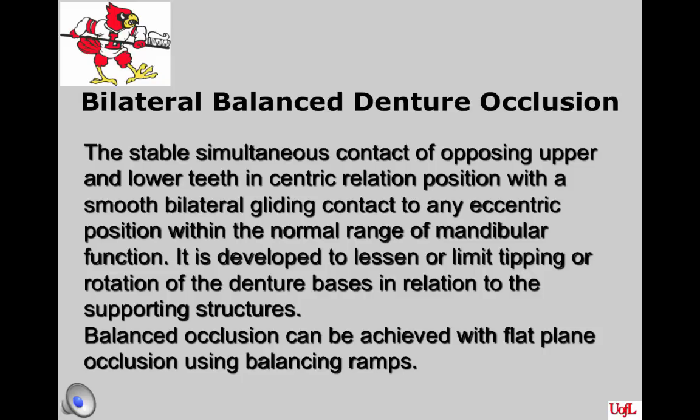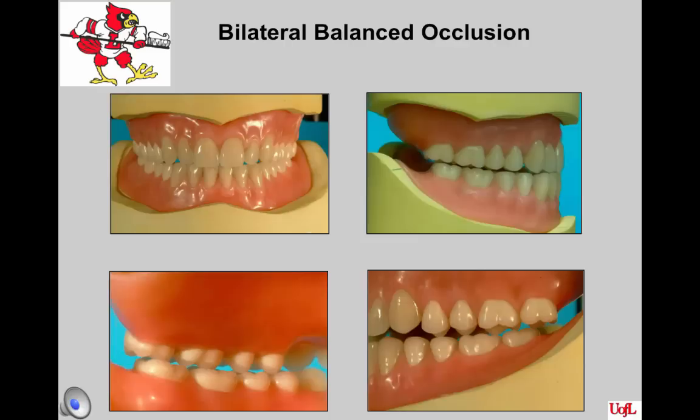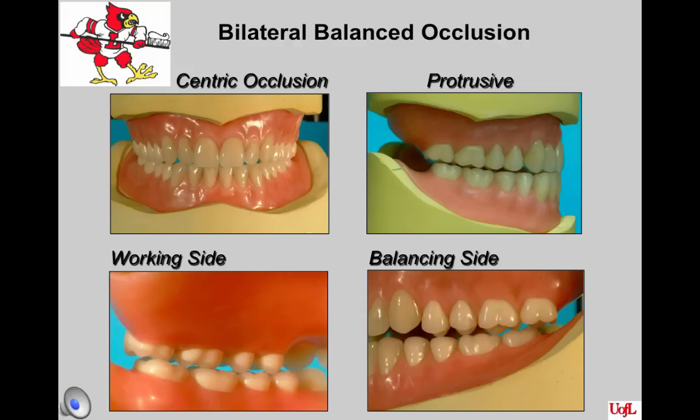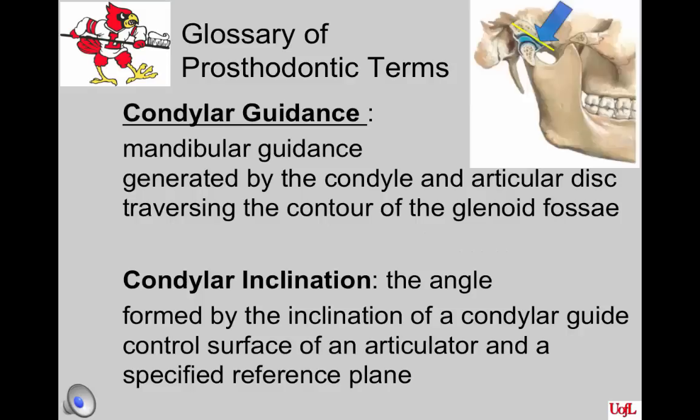Bilateral balanced denture occlusion is usually worked into the occlusal scheme when anatomical teeth are used. It is the stable simultaneous contact of opposing upper and lower teeth in centric relation position with a smooth bilateral gliding contact to any eccentric position within the normal range of mandibular function. It is developed to lessen or limit the tipping or rotation of the denture bases in relation to the supporting structures. Balanced occlusion can also be obtained with flat plane teeth using balancing ramps.